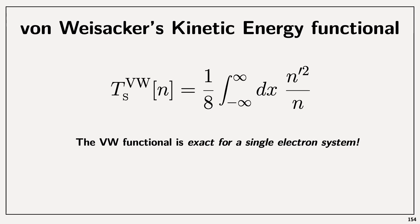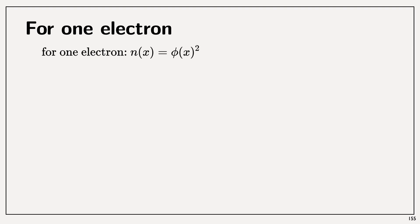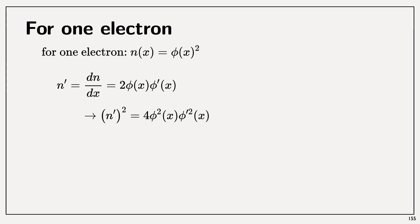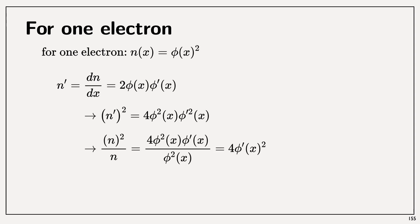For one electron, the density can be obtained directly from the square modulus of the wave function. Here I'm using a real wave function, but you can use this for a complex wave function as well. We are doing one electron in one dimension, but it's easy to extend to three dimensions. The derivative of the density with respect to position is elementary, and of course the square of that derivative is also elementary. If we divide this by n, we obtain a value where n′² divided by n equals 4ψ′(x)².